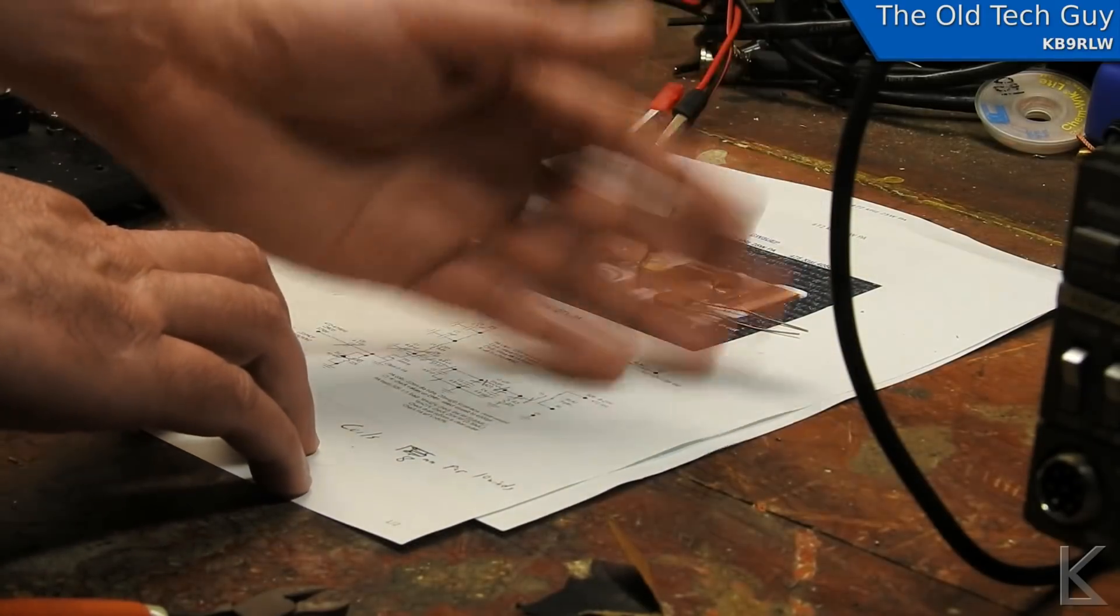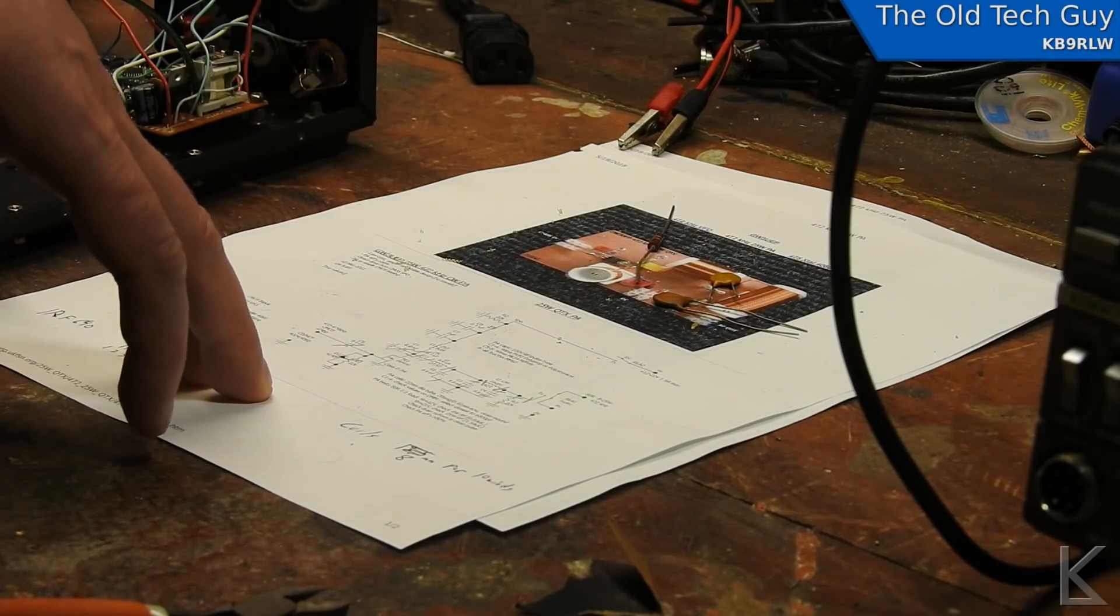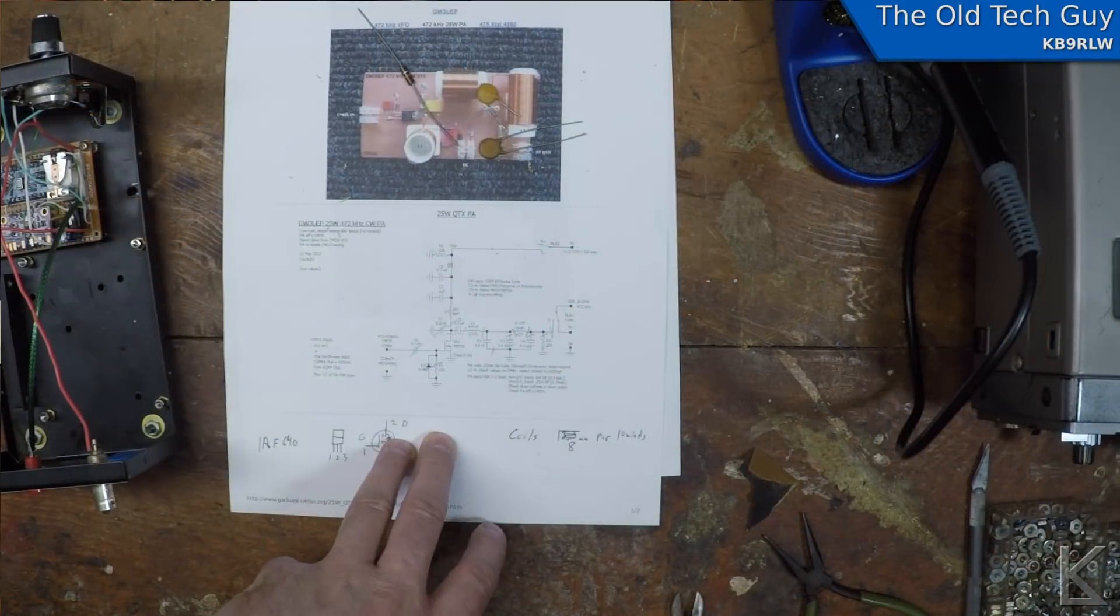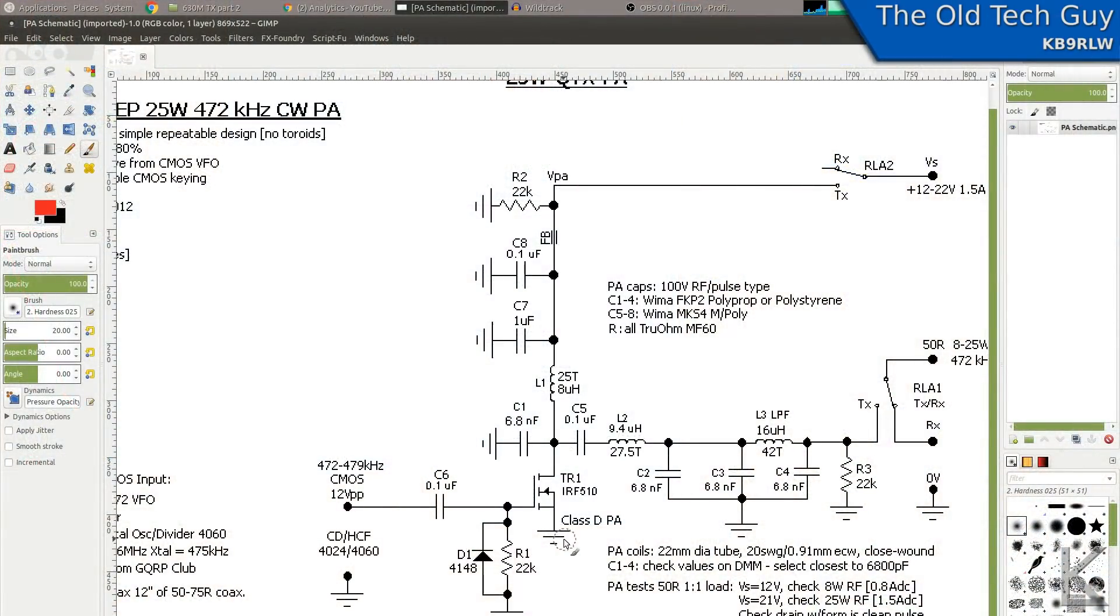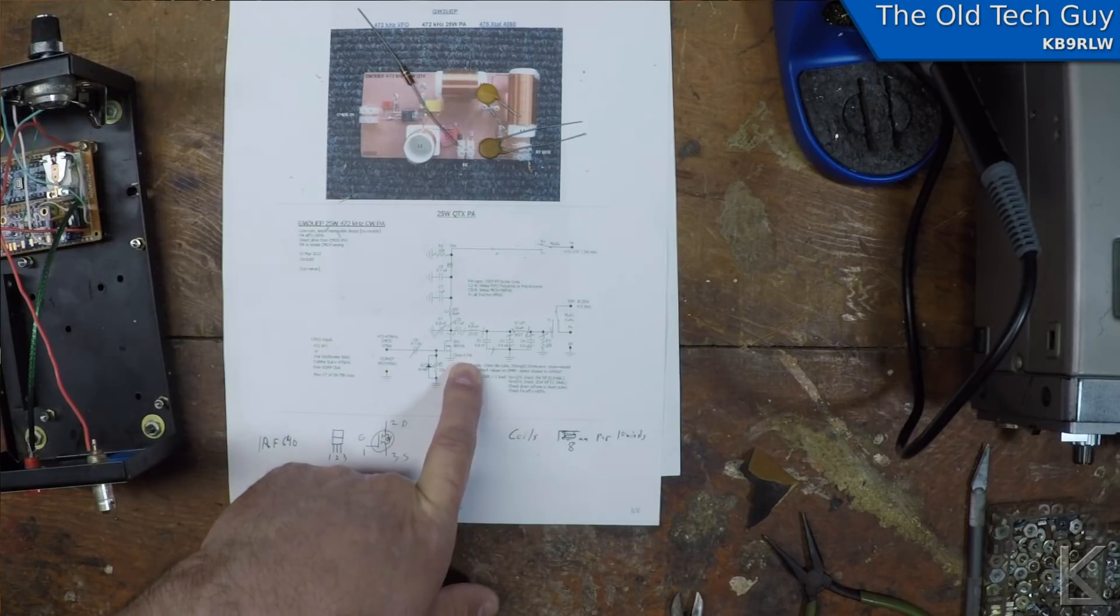From the part one video I was describing the power amp that I'm using from GW3UEP's design and on his schematic he has it labeled as a class D power amplifier which I parroted in the video and it was pointed out to me that that is actually incorrect. It's a class E amplifier.